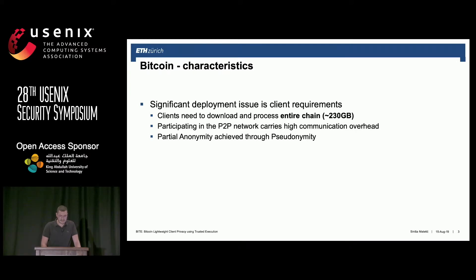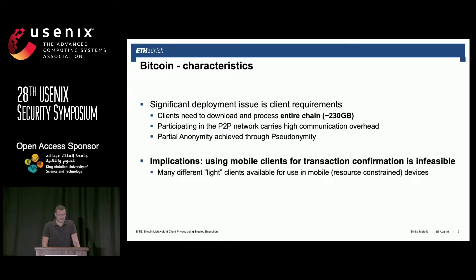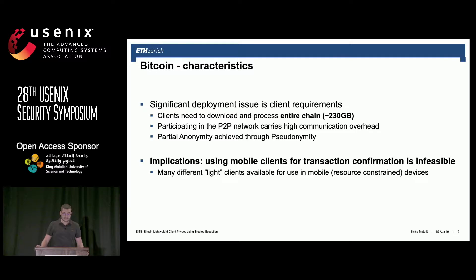Bitcoin offers partial anonymity achieved through pseudonymity. Using mobile clients for transaction confirmation is usually infeasible. To address this problem, most major blockchains and Bitcoin alike support the so-called lightweight clients that outsource most of the computational and storage burden to the full blockchain nodes.